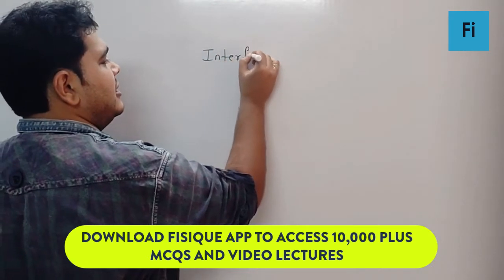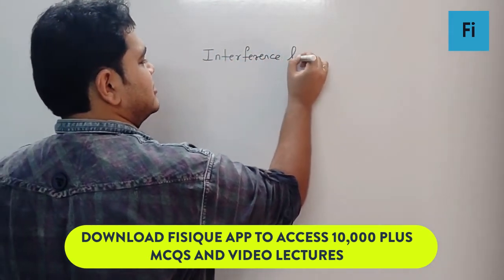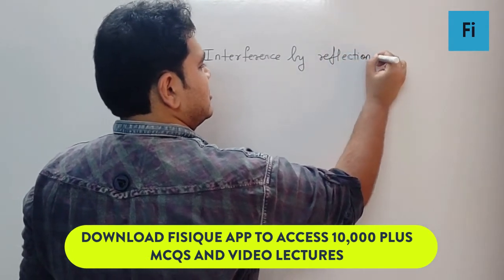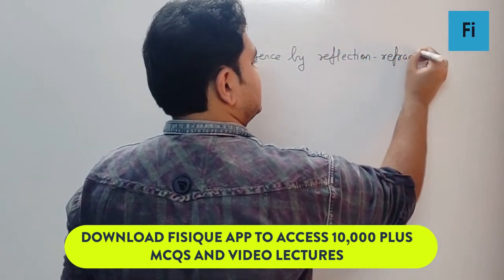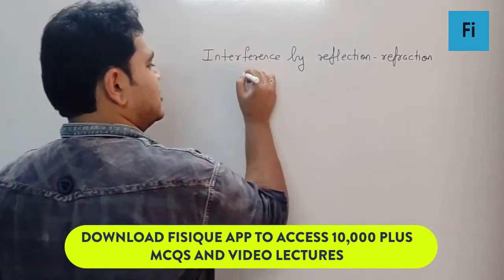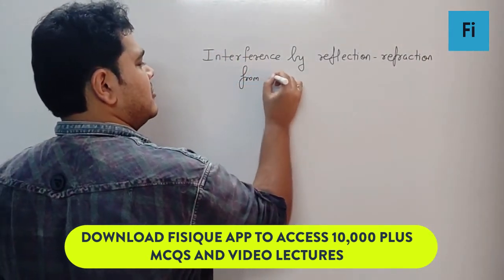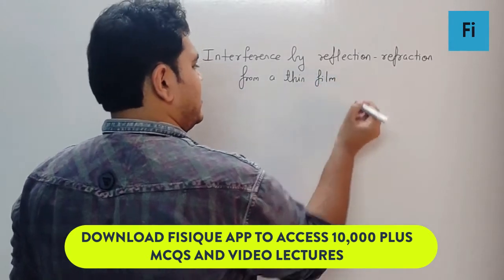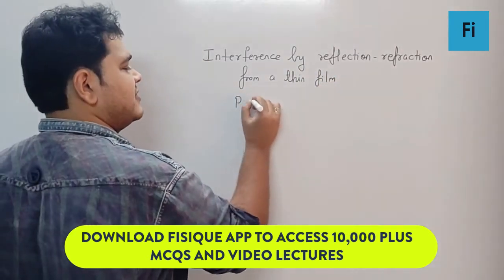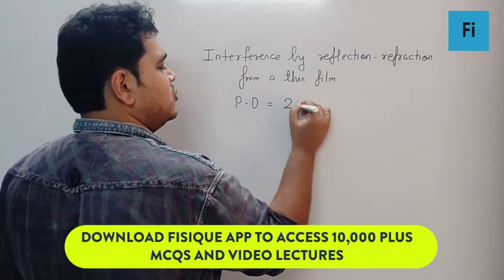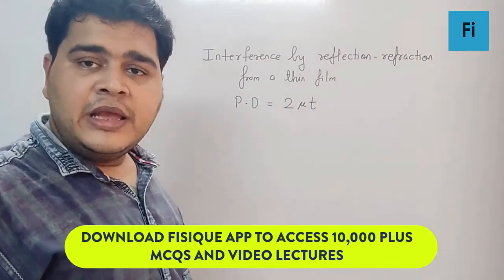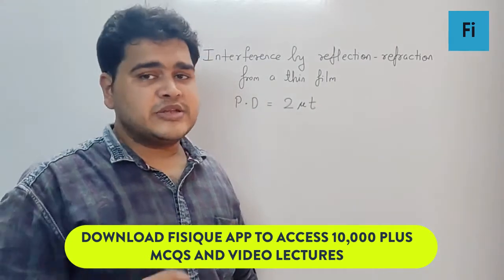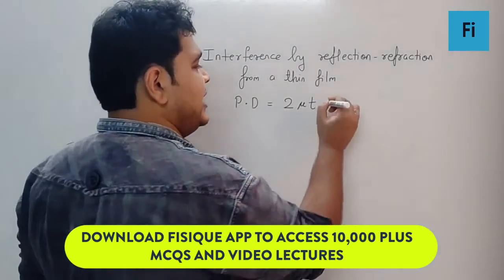The path difference is nothing but 2μt, where μ is the refractive index of that thin film and t is the thickness of that film.